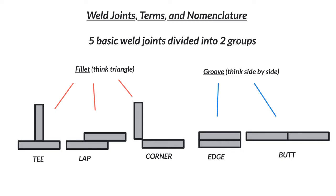It could be a fillet weld. So you've got a plate and then you've got a tube welded together — that could be a T. When you really break it down, we've got about five main weld joints: T, lap, corner, edge, butt. It's worth mentioning that an edge is not that common. T's and laps are really common types of fillets. Corners are out there, absolutely. But when it comes to groove welds, butt is going to be way more popular than an edge weld.